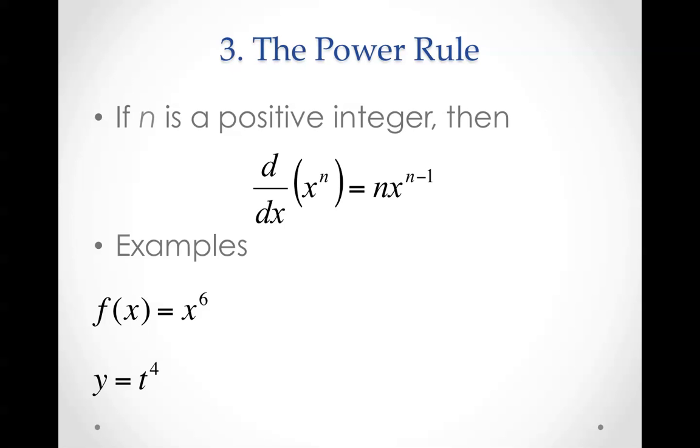The power rule: If n is a positive integer, then the derivative of x to the n equals n times x to the n minus 1. Here are some examples. f(x) equals x to the 6th. We've got to bring the 6 down, times it out front, and then do 6 minus 1. That gives us 6 times x to the 5th. Same for the next one. Bring the 4 out front, write the t, and then do 4 minus 1, which gives us 4t to the 3rd.